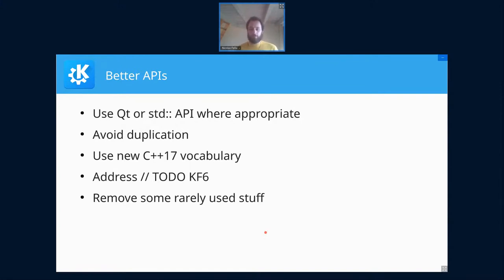The transition is also the time to address all those TODO KF6 comments scattered across the codebase — to fix up all those little API things we can't fix right now because of strong API stability guarantees. We also want to remove stuff that is not used at all or very rarely used, because unused code is untested code, which means it's likely broken code, and it increases the overall maintenance burden.